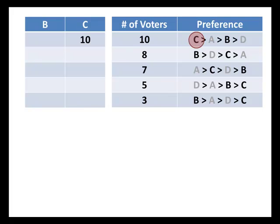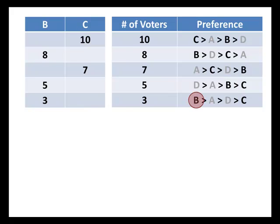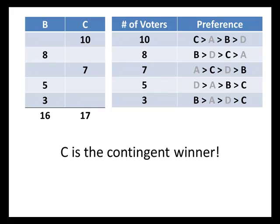In the first row, those 10 voters would vote for C. The next eight voters vote for B. The next seven voters have A as their top choice, but since A is not in the runoff, they settle for their second choice, C. The next five voters prefer D, but D isn't in the runoff, and their second choice A is also eliminated, so they settle for their third choice and vote for B. The last three voters also vote for B. Adding up the totals, C narrowly beats B 17 to 16, so C is the contingent winner.